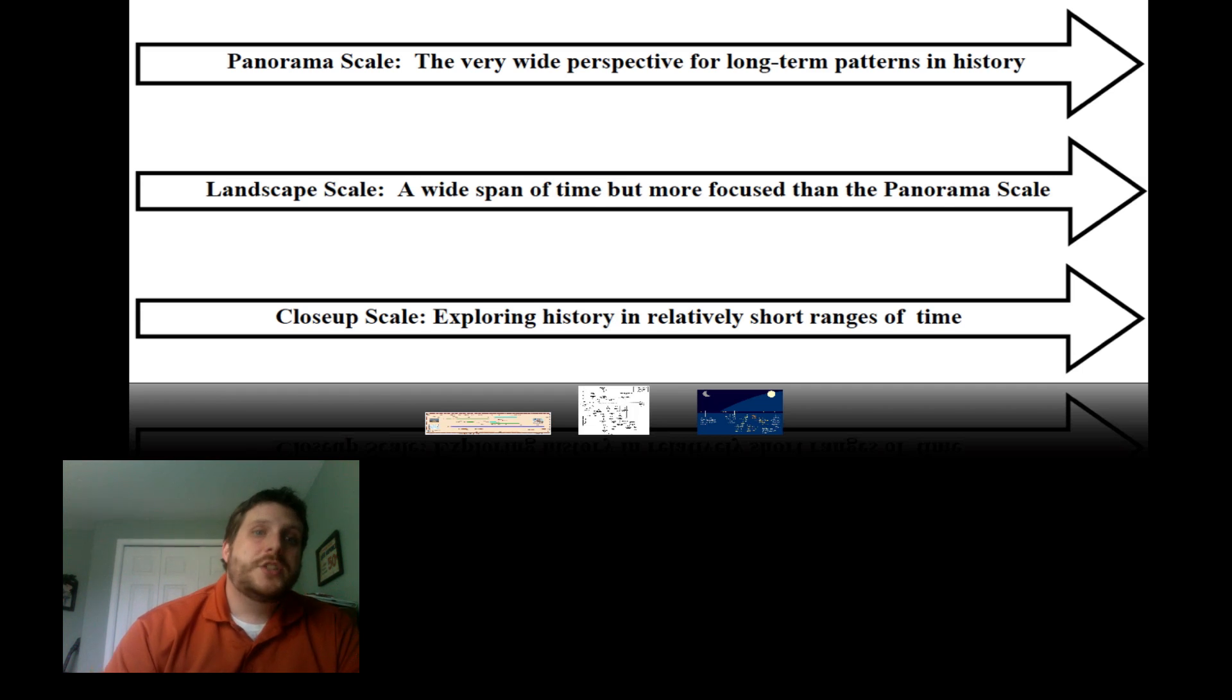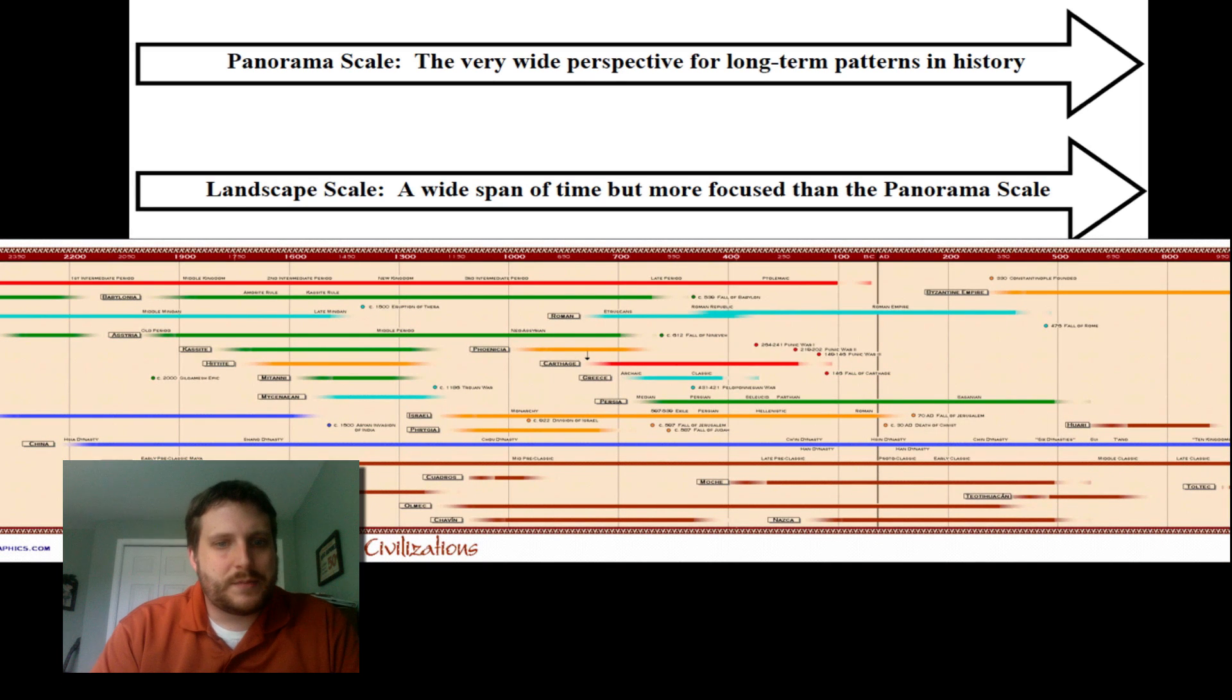Let's talk about each one. So you've got a panoramic scale. This is a very wide perspective and it's a long term, it helps you find long term patterns in history. So when we looked at this timeline, for example, it showed us patterns of different civilizations around the world that started in a wide range. We're talking thousands of years on this timeline.